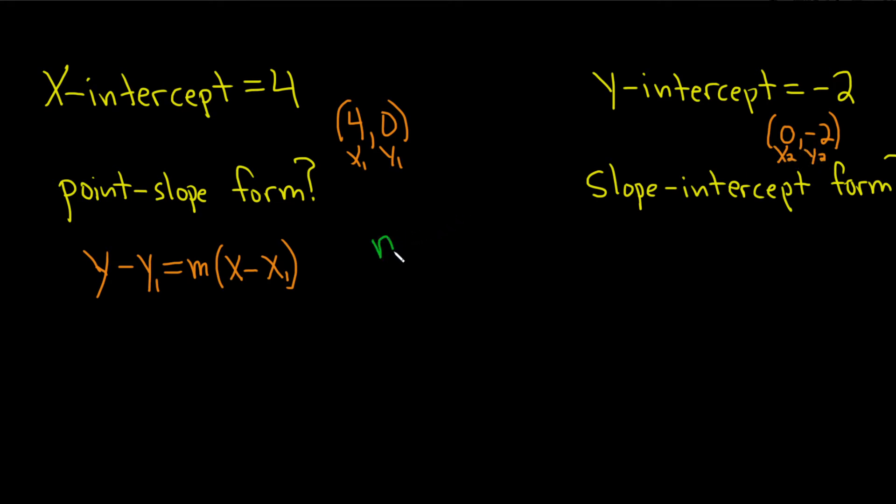Because remember, the formula for m is the following. You basically subtract the y's, so y2 minus y1. Then you divide, and then you subtract the x's: x2 minus x1. This is the formula for m.